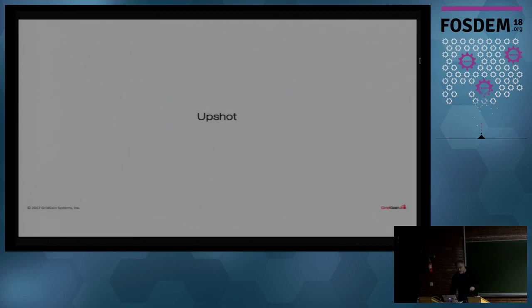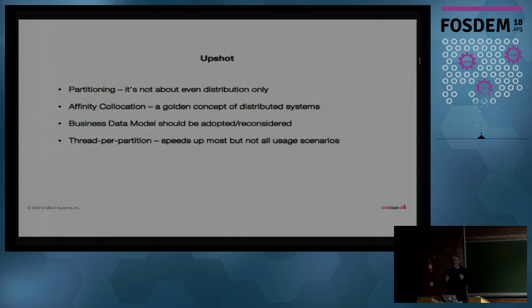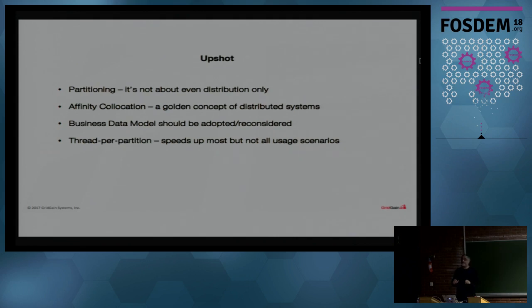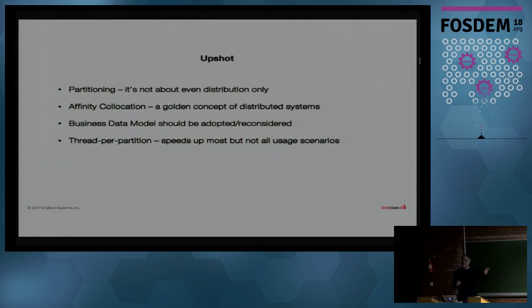As lightning talks go, there's only so much we can cover. Key points: partitioning is not just about even distribution — there are other distributions that can work quite effectively, and over time things will balance out, which is fine. Affinity co-location is a golden concept of distributed systems — a very useful feature for particular types of processing, but it does require architectural and business-model decisions. This is also a general principle for many other distributed systems, not just Ignite.